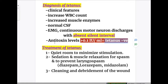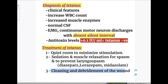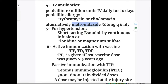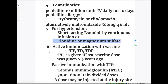Treatment of tetanus: Number one, quiet room to minimize stimulation. Number two, sedation and muscle relaxation for spasm and to prevent laryngospasm, with benzodiazepines like diazepam, lorazepam, and short-acting midazolam. Number three, cleaning and debridement of the infected wound. Number four, antibiotics — penicillin 10 million units IV daily for 10 days; for penicillin allergy, alternatives are erythromycin or clindamycin; alternatively, metronidazole 500 mg every 6 hours may also be used. Number five, for hypertension: short-acting esmolol by continuous infusion, or clonidine, or magnesium sulfate.